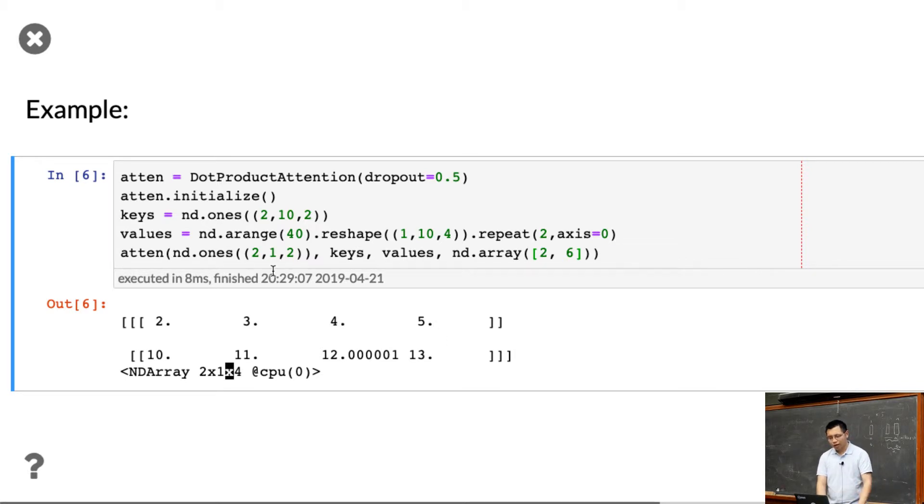So the idea here is, for these two examples, all these key value queries are same, but choose a different valid length, you will still get different attention output.